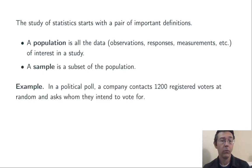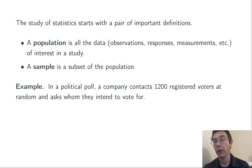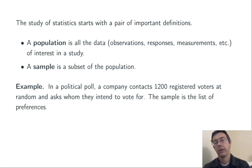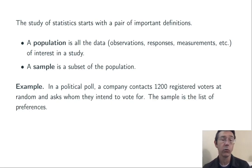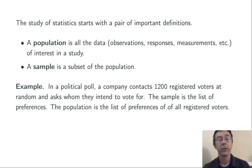For example, imagine a political poll where a company contacts 1,200 voters at random, asking who they intend to vote for. The sample is going to be the list of preferences of those 1,200 individuals, while the population is going to be the list of preferences of all registered voters.